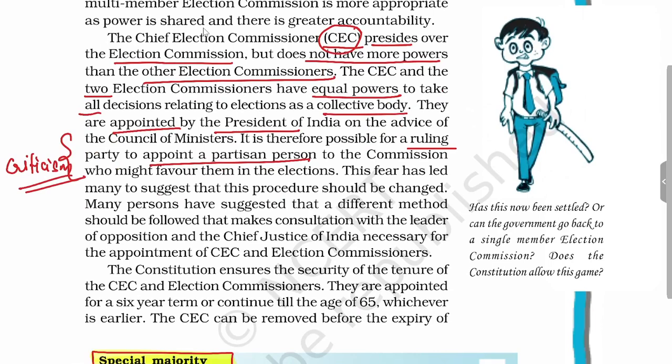There are suggestions that while appointing Election Commissioners, there should be consultation with the Chief Justice of India and the Leader of Opposition, so that the ruling party cannot appoint their own person as an Election Commissioner, which could help them in elections and reduce the chances of fair elections in India.